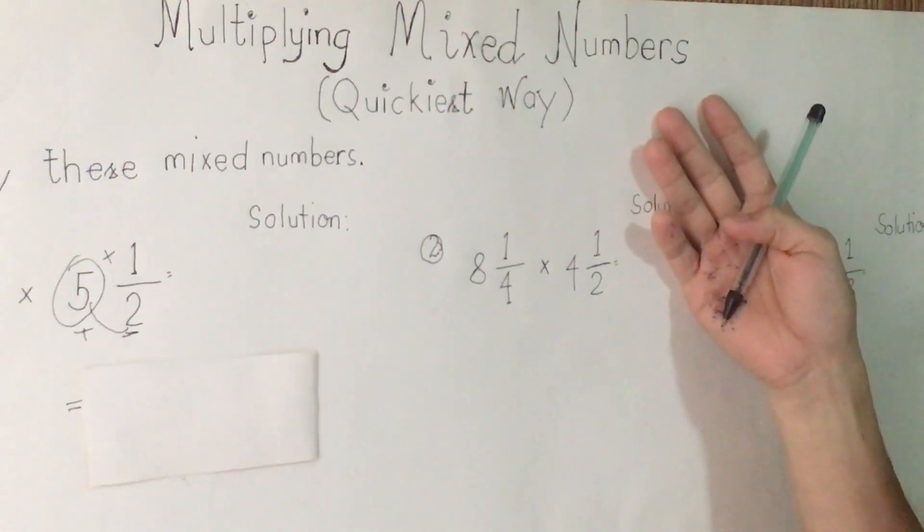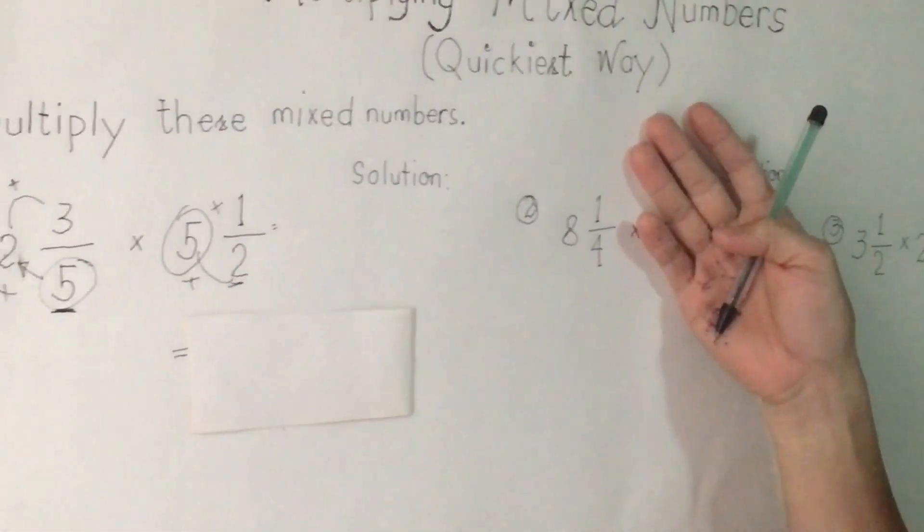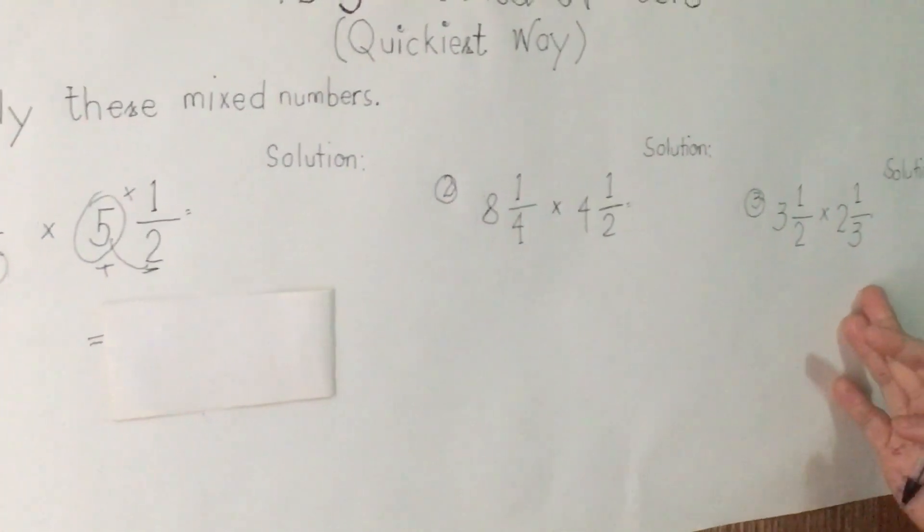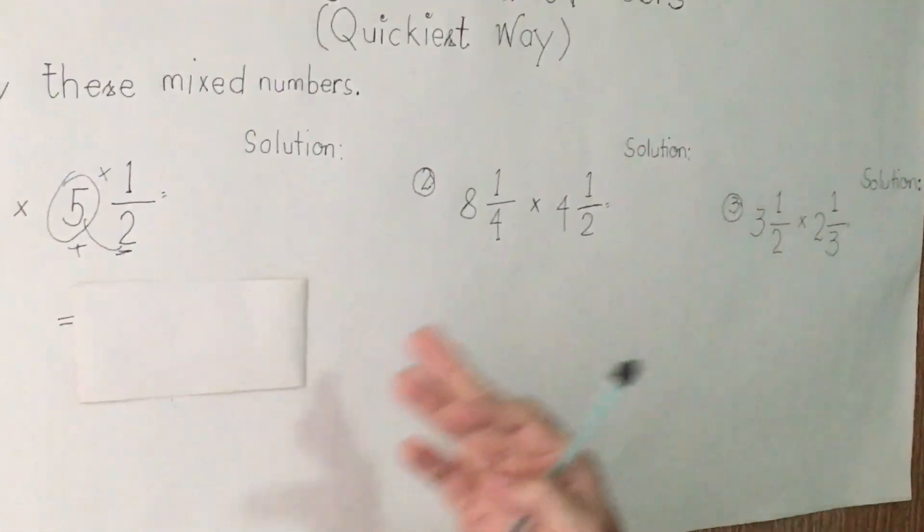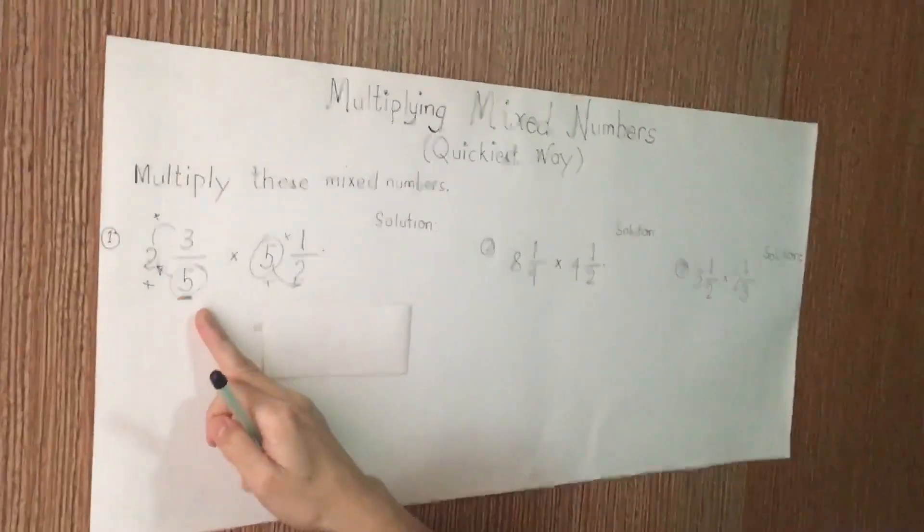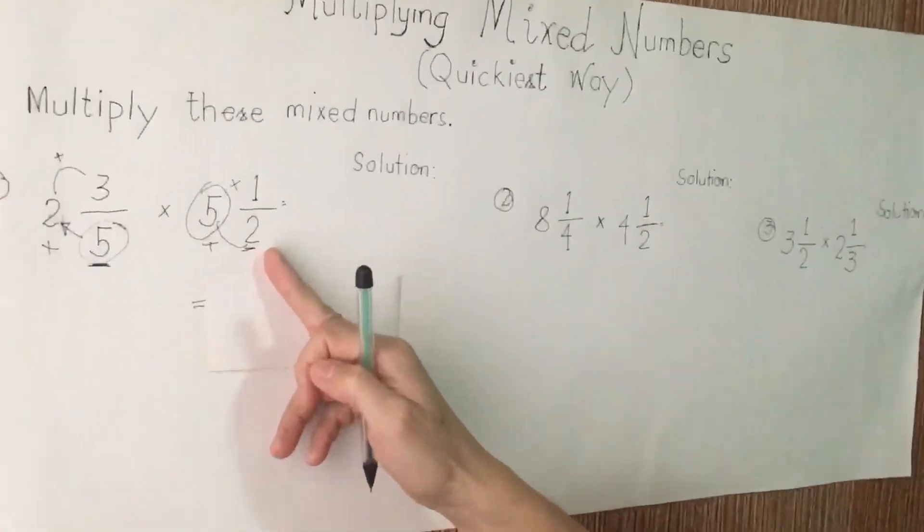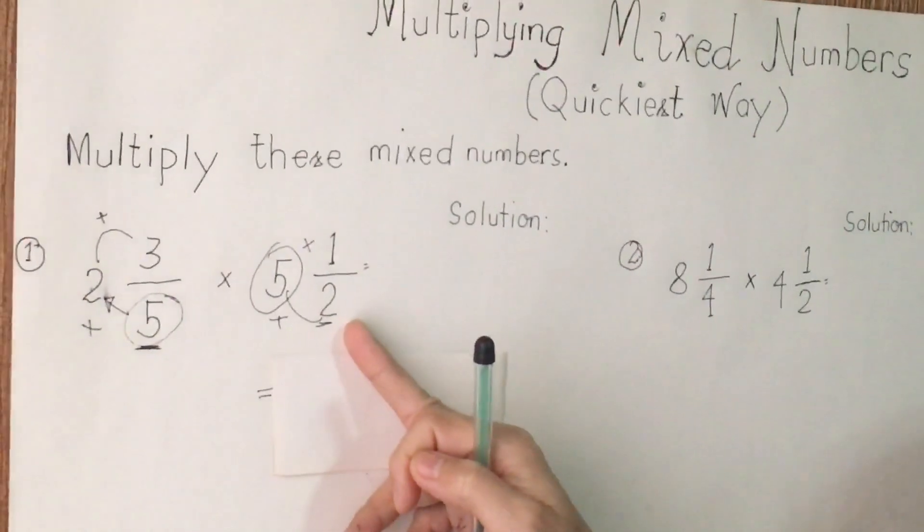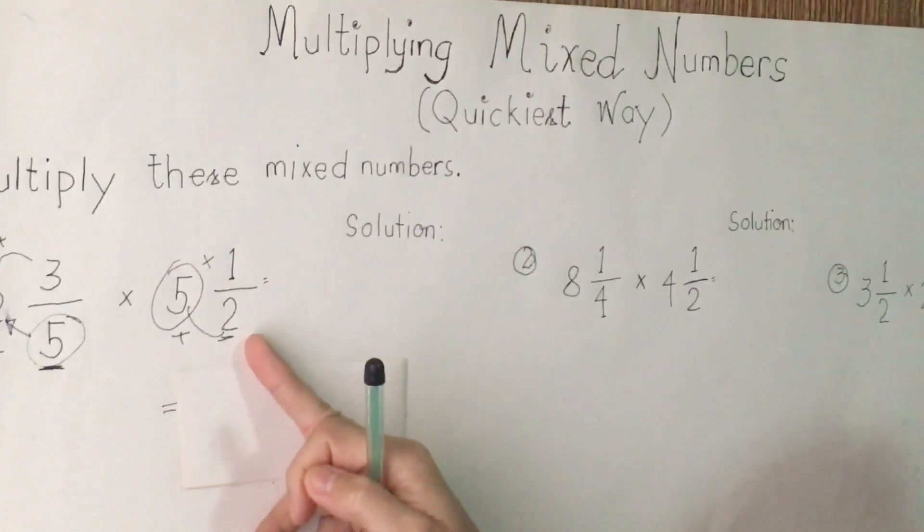I will give you the quickest way on how to solve these three problems. First, we are going to convert mixed numbers to improper fractions. The question here, by how? How to do that?